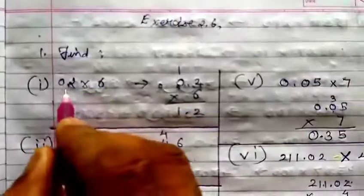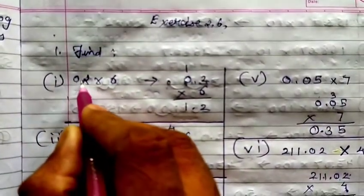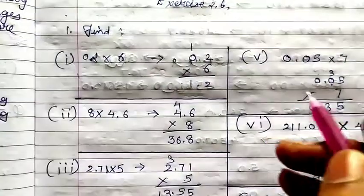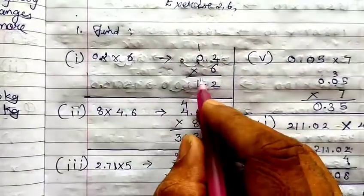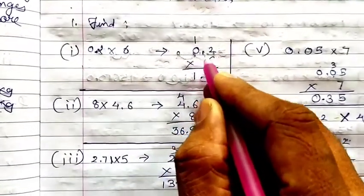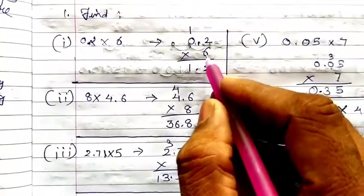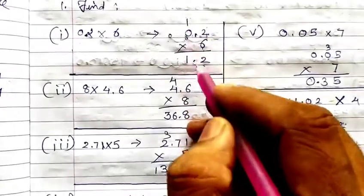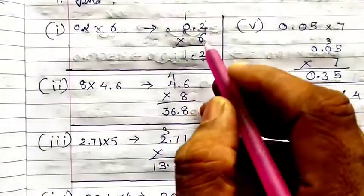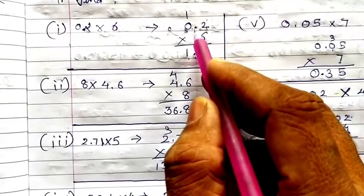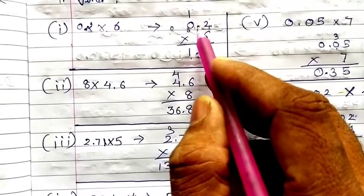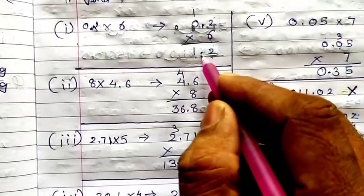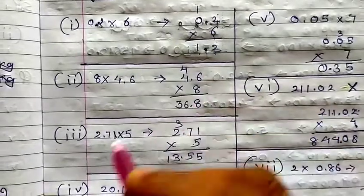The first question is 0.2 into 6. Write it down in multiplication form: 0.2 multiplied by 6. 2 sixes are 12, carry 1. 6 zeros are 0, plus 1 is 1. Now where to put the decimal? In the question, after the decimal there is 1 digit, so from the last you leave 1 digit and place your decimal there.